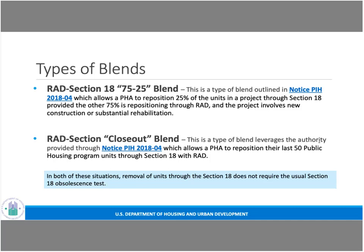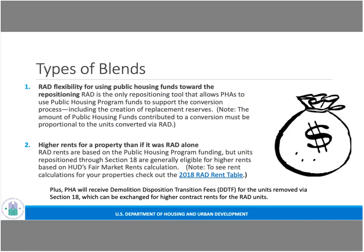The second type is the RAD Section 18 Closeout Blend. This is for PHAs that have repositioned most of their units and have 75 to 100 remaining and want to close them out. If you have over 50 units, you can get up to 50 units as Section 18 and the remainder as RAD. If you have fewer than 50 units but still want to blend, you can mix and match — for example, with 30 units you might do 4 units of RAD and 26 units of Section 18. Under both blends, the obsolescence test required for a standard Section 18 is not required.